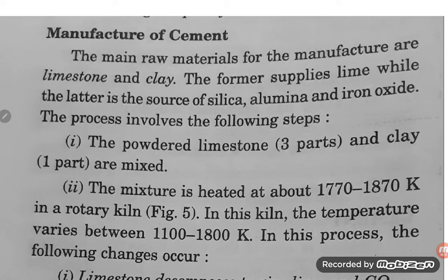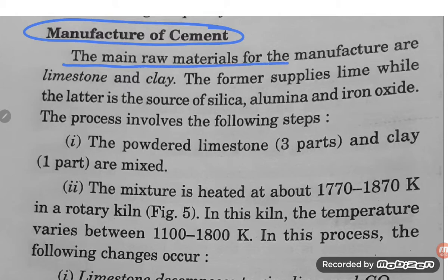Hello, good morning students. Let us try to understand the manufacture of cement. The main raw materials for the manufacture of cement are limestone and clay.